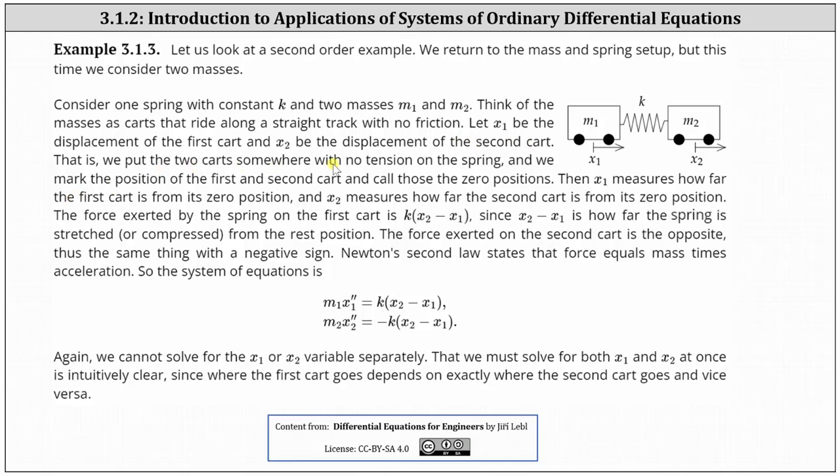That is, we put the two carts somewhere with no tension on the spring, and we mark the position of the first and second cart and call those zero positions. Then x1 measures how far the first cart is from its zero position, and x2 measures how far the second cart is from its zero position.